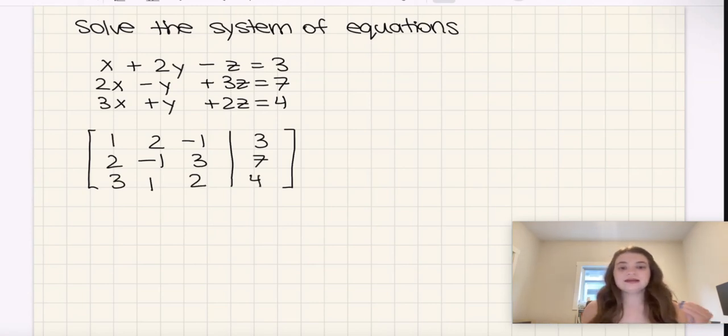Alright, so my first goal is going to be to get these two numbers here, this 2 and this 3, to equal 0. That's goal number 1 here.